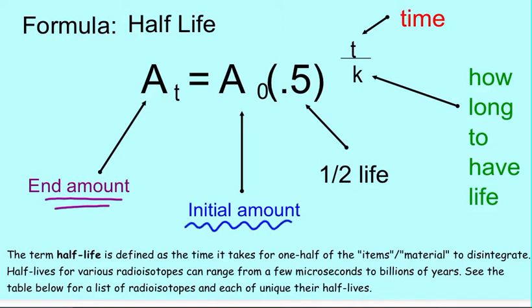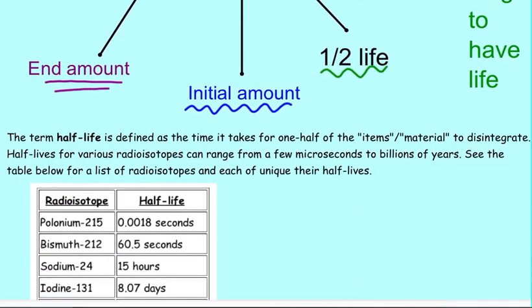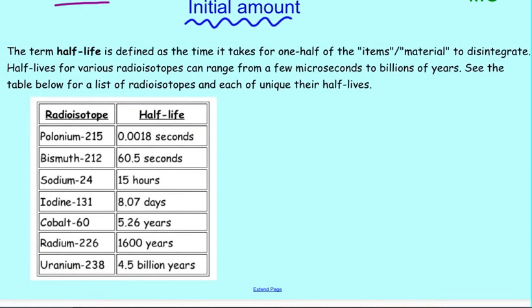0.5 is your decay rate, and then your exponential piece is your t over k. t represents your time, and k represents how long it takes for a half-life to happen.